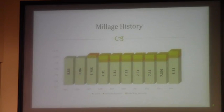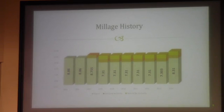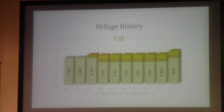Looking at millage history, this represents the countywide millage over the last 10 years. The portion in gray, with the numbers called out, is the portion that goes to Lowndes County. You'll see the high there of $8.86 in 2005 and 2006. Last year was $7.303, and this year is $8.31.